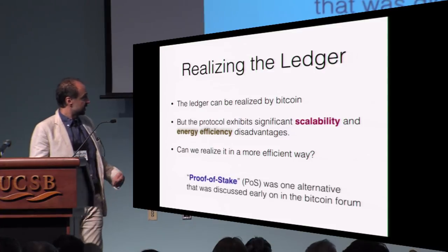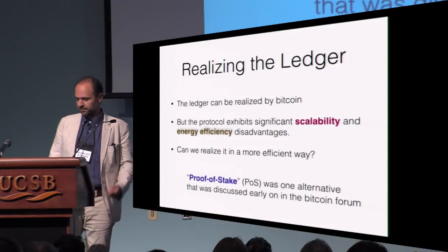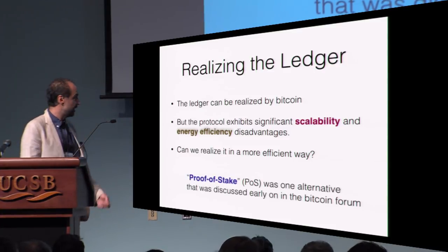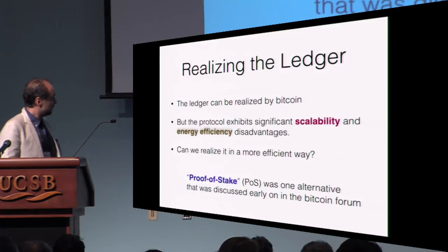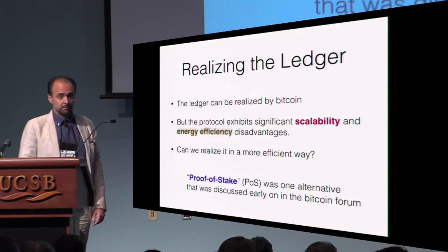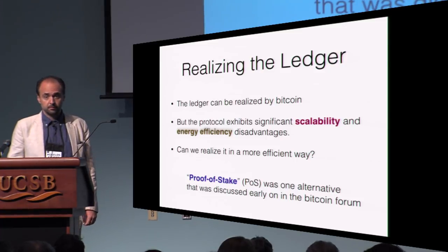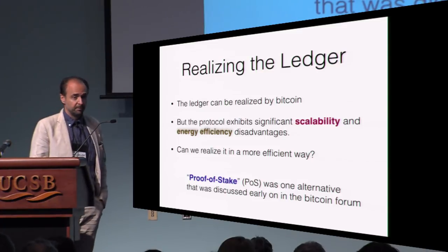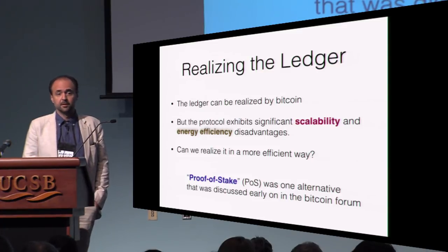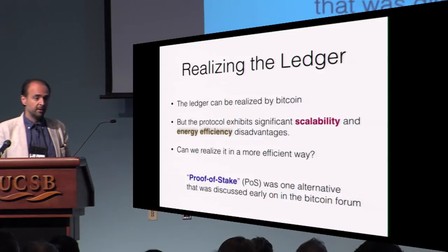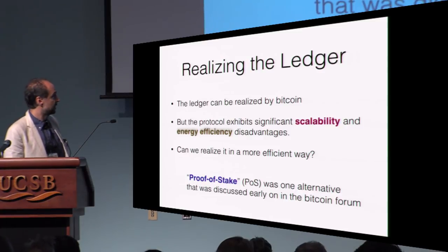It is at this point that an idea called proof of stake was circulated in the Bitcoin community as early as 2011 as a possible way of designing a more efficient ledger.